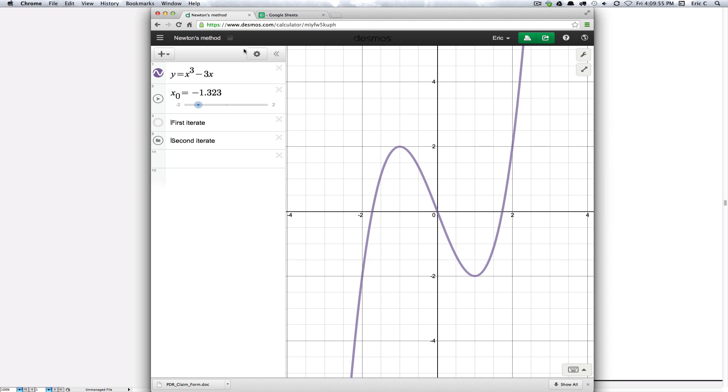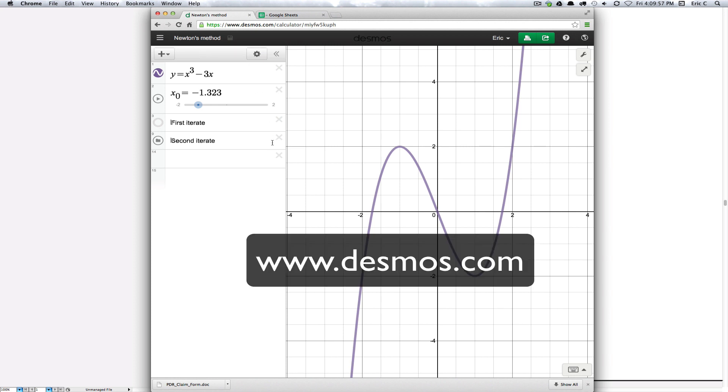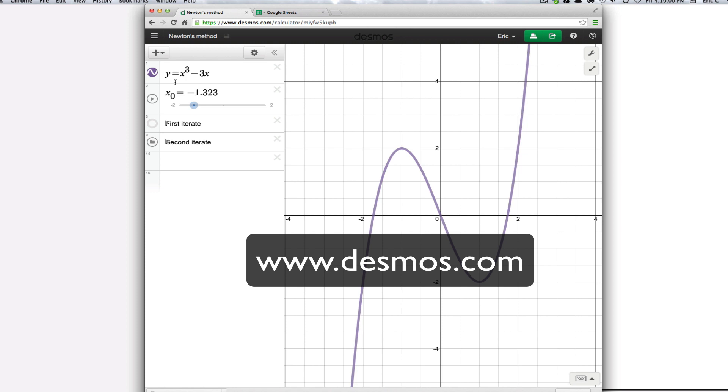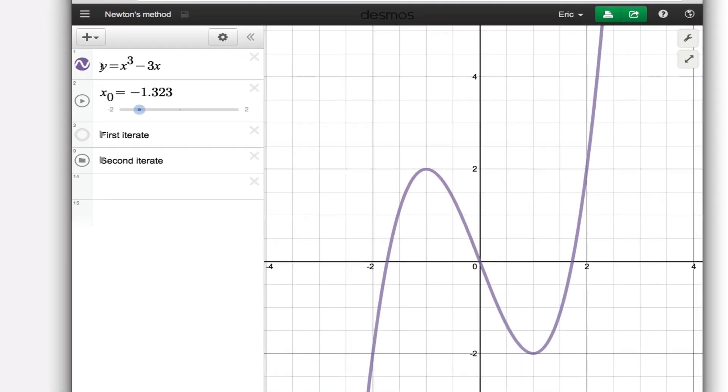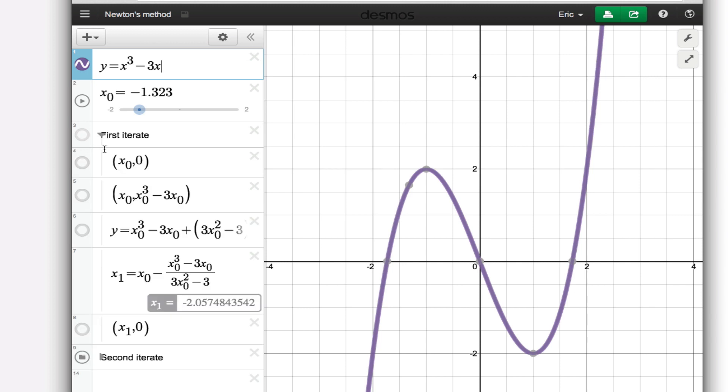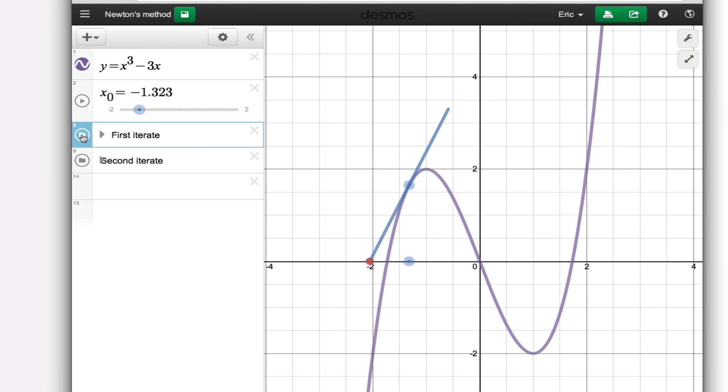First, I write in the formula for the function so I can see what it looks like. Then here I have a bunch of lines that plot out different things, so let me make them all visible at once.